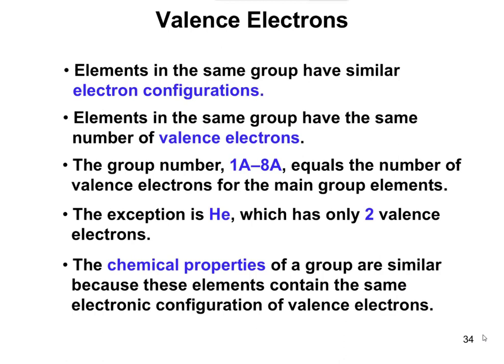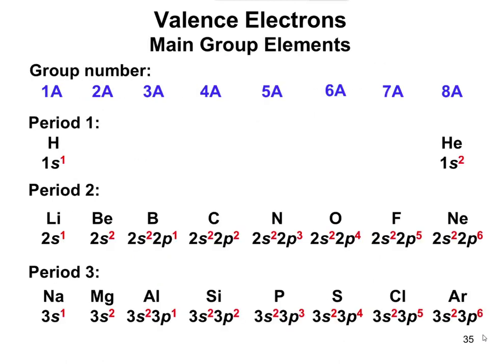The group number, if you use the 1A to 8A method of naming the groups, the number of that group is going to equal the number of valence electrons. So if you look at anything in group 1A, it's going to have one valence electron—hydrogen, lithium, sodium. Anything in 2A, beryllium or magnesium, is going to have two valence electrons. Anything in 3A, boron or aluminum, is going to have three valence electrons. So on and so forth, all the way across until you get over to 8A.